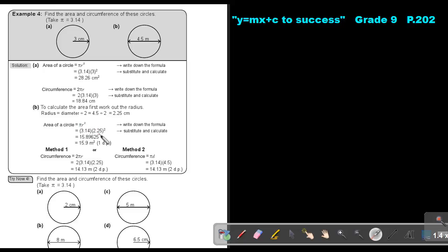I do substitution: π, r, and I square it. And if I multiply it and I approximate to one decimal point, I will get 15.9.